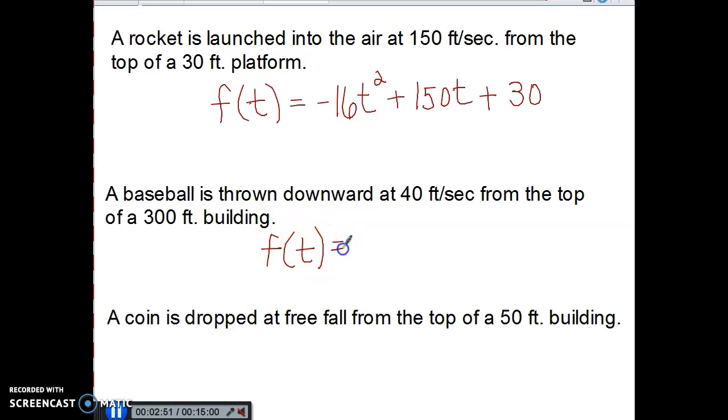My quadratic is going to start out the same way. My direction is now changing. Since it's being thrown downwards, I would use a subtract. The initial velocity in which it's being thrown downwards is 40. Since I'm above ground level by 300 feet, my constant would be a plus 300.